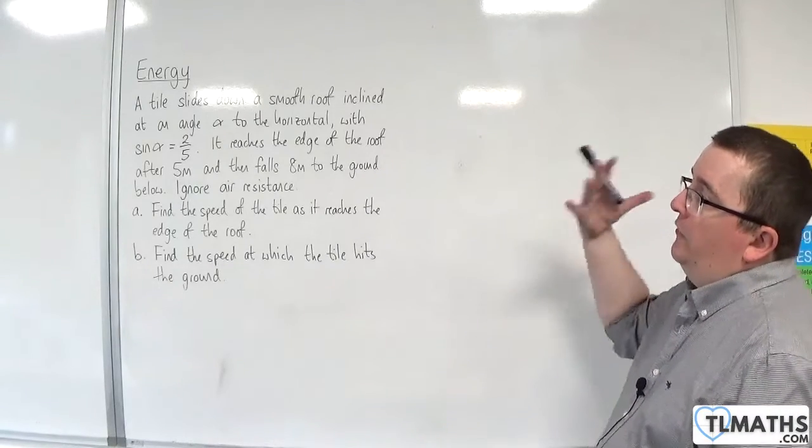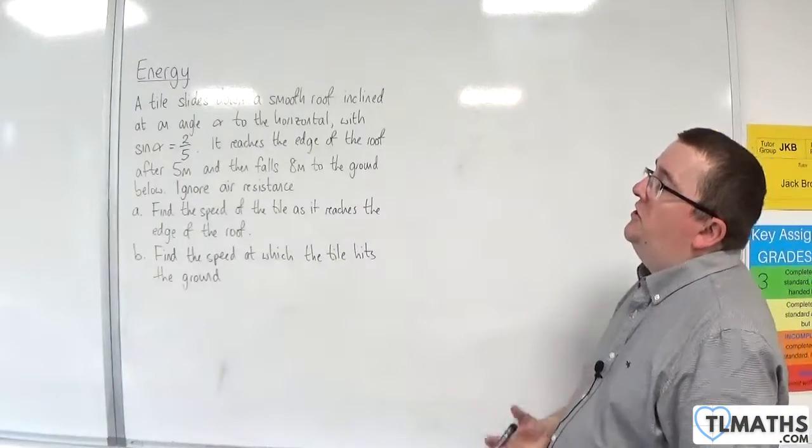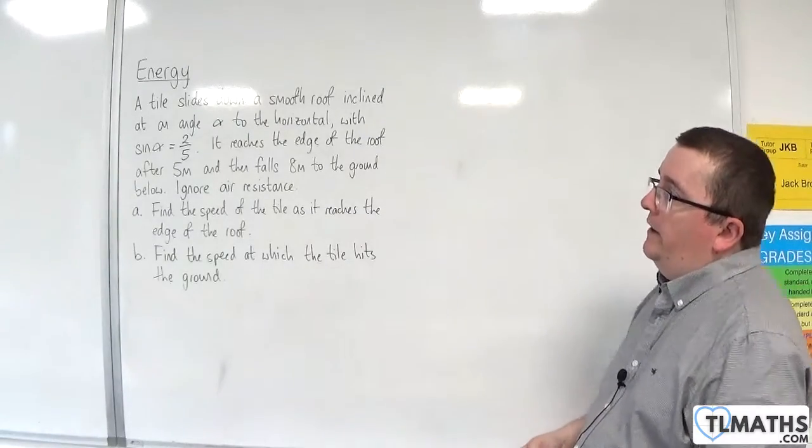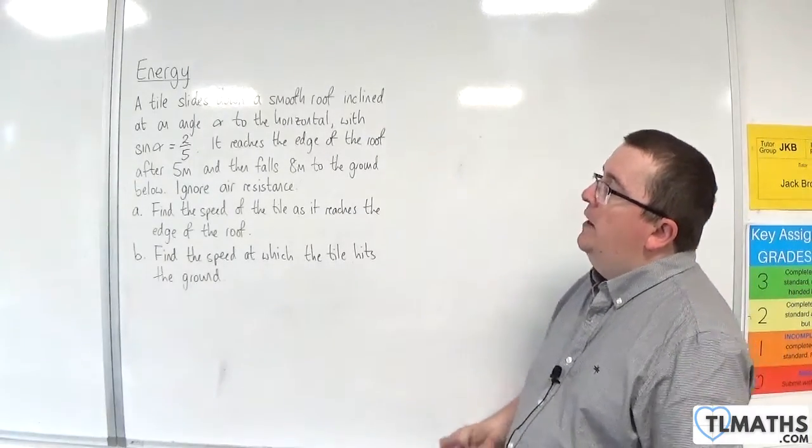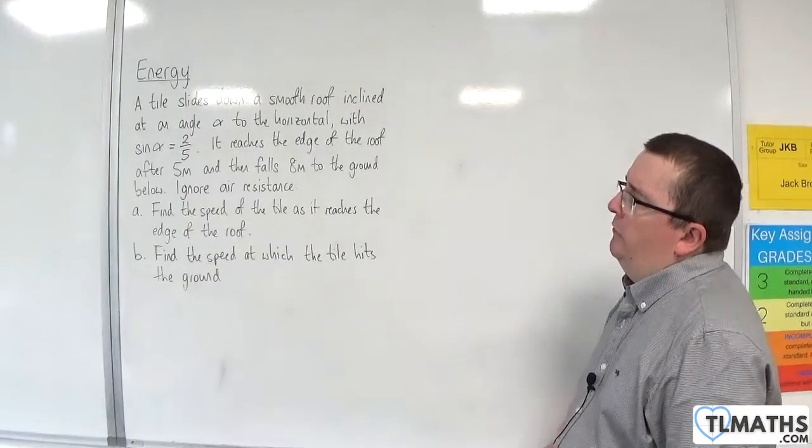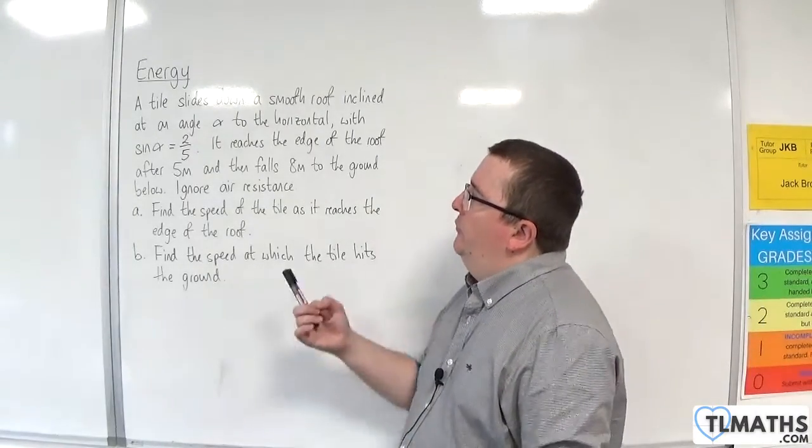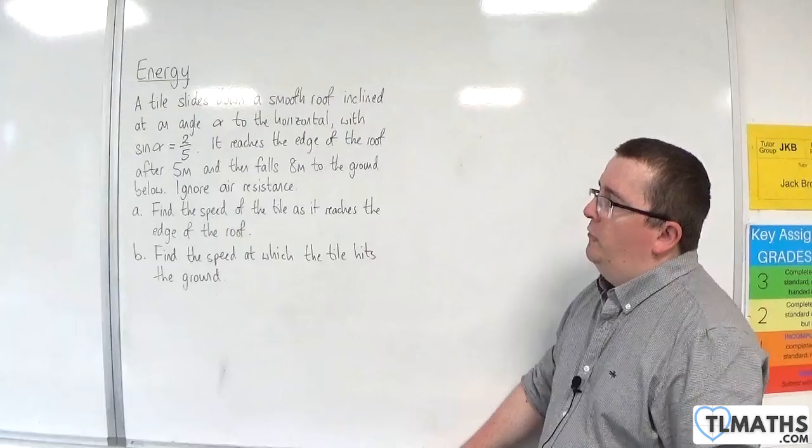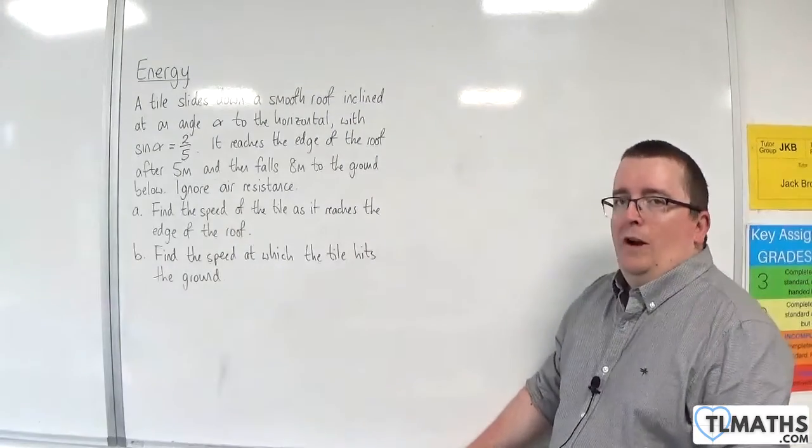So in this problem, we're going to consider a tile that slides down a smooth roof inclined at an angle alpha to the horizontal, with sine alpha equaling two-fifths. It reaches the edge of the roof after five metres and then falls eight metres to the ground below. Ignore air resistance.